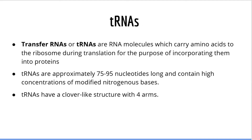Let's start with transfer RNAs or tRNAs. tRNAs are RNA molecules which carry amino acids to ribosomes during translation for the purpose of incorporating them into proteins. tRNAs are made by RNA polymerase type 3 in eukaryotic cells. They are single-stranded RNA molecules approximately 75 to 95 nucleotides long. What makes tRNAs unique is that they have a high concentration of modified nitrogenous bases, which are unique and only found in tRNAs.